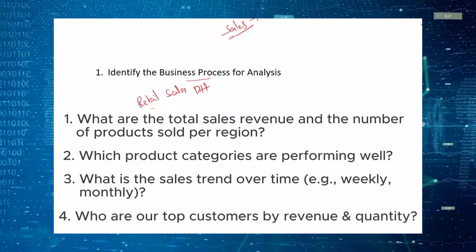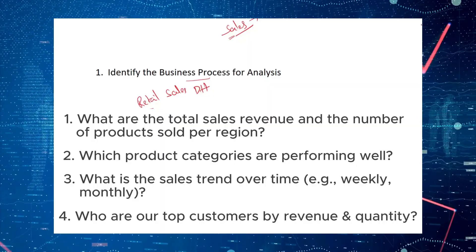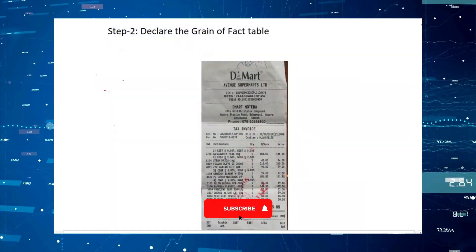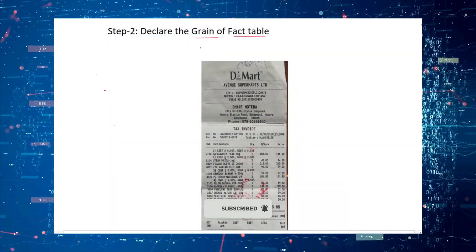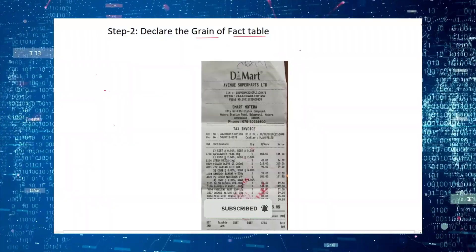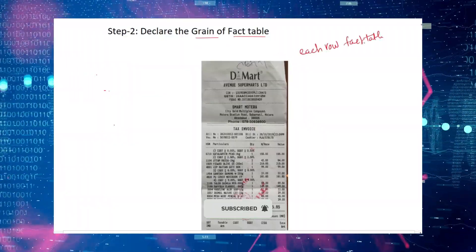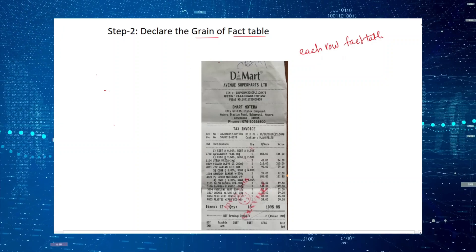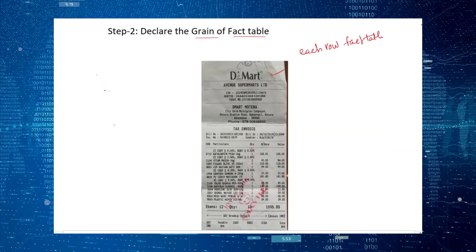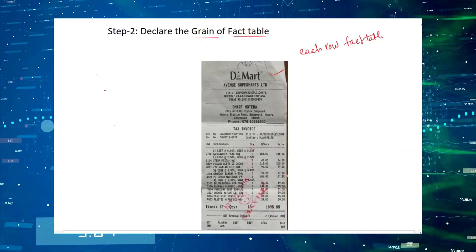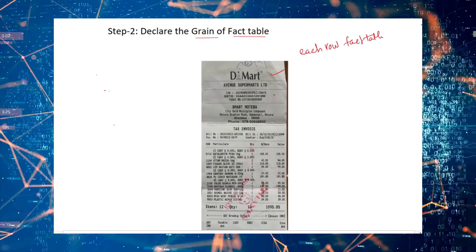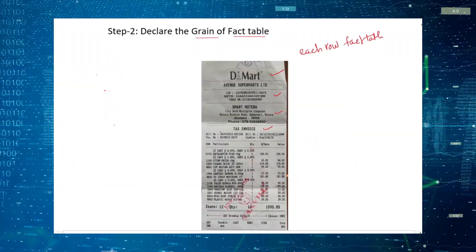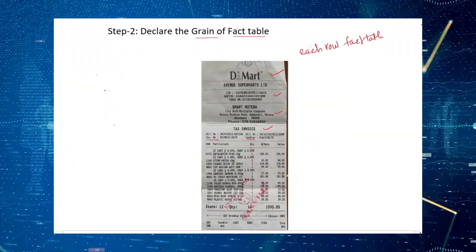In this business process, we mainly need to identify the transaction — either sales or order processing. The next step is to declare the grain of the fact table. The grain refers to what each row in the fact table represents — what information each row should contain. To determine this, we look at an invoice or receipt. Taking the D-Mart invoice as an example, it contains information about the store, customer, tax, bill number, bill date, cashier, and other details.